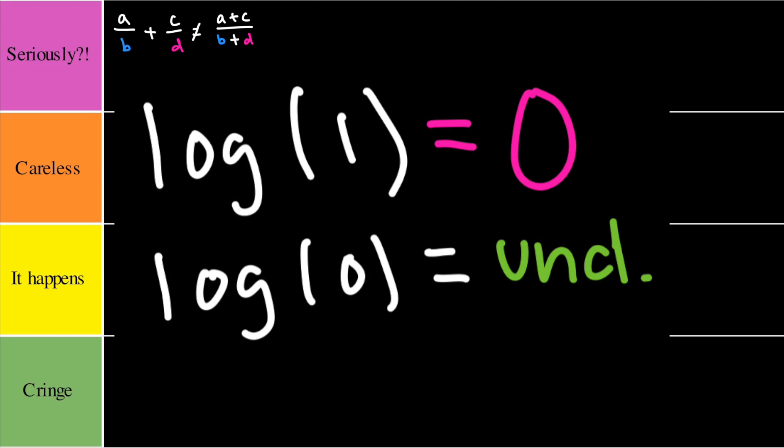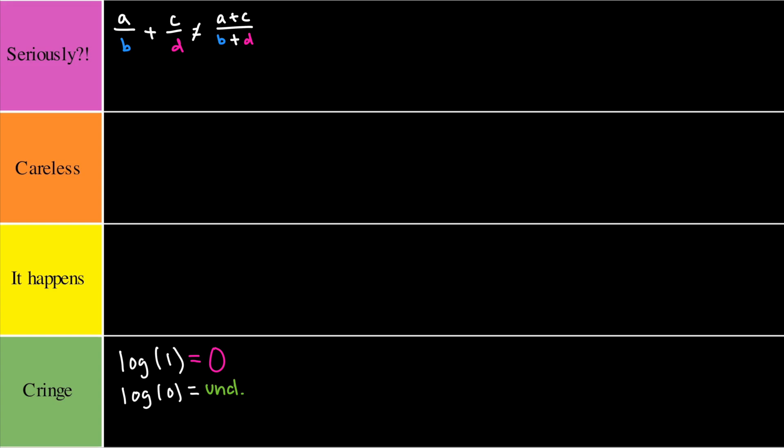Next up we have log(1) equals zero and log(0) equals undefined. So these two are both true, you can tell from its parent function that this is the case. However, this problem arises when students are solving log expressions and don't simplify them down all the way. This would have to go in the cringe category, simply because if you're taking a quiz and you put one of these down without simplifying it all the way through, you're gonna come back later and cringe at yourself for losing those points.